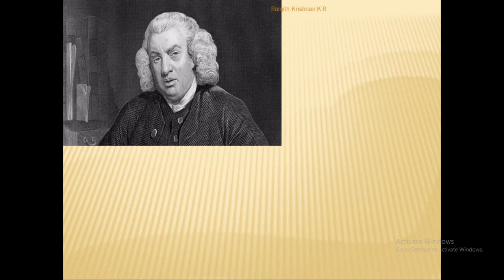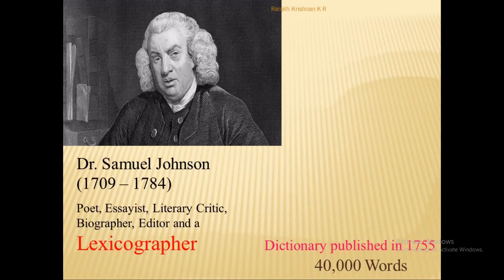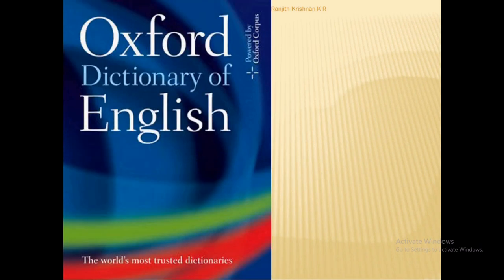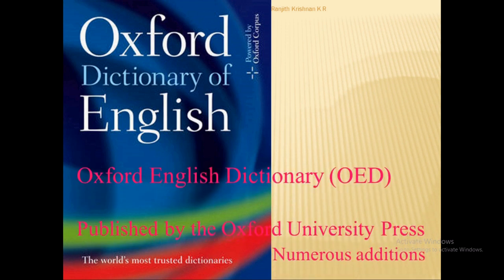This man is none other than Dr. Samuel Johnson — a poet, essayist, literary critic, biographer, editor, and lexicographer. This was the first dictionary ever published; it was published in 1755 and contained 40,000 words. But what about the present condition? One of the most popular dictionaries of the modern world is the Oxford Dictionary of English, which now contains lakhs and lakhs of words with numerous additions every time.